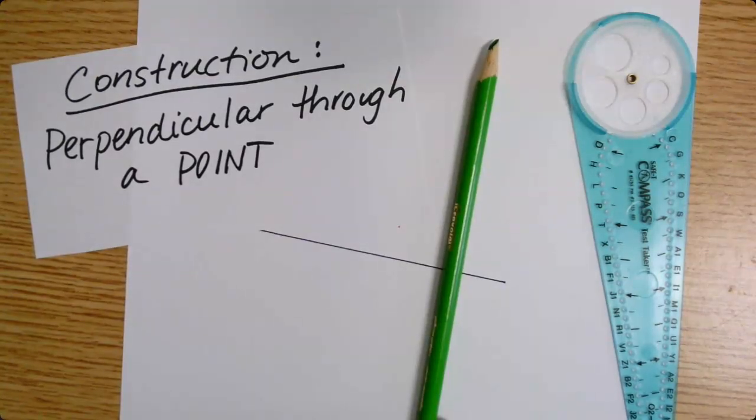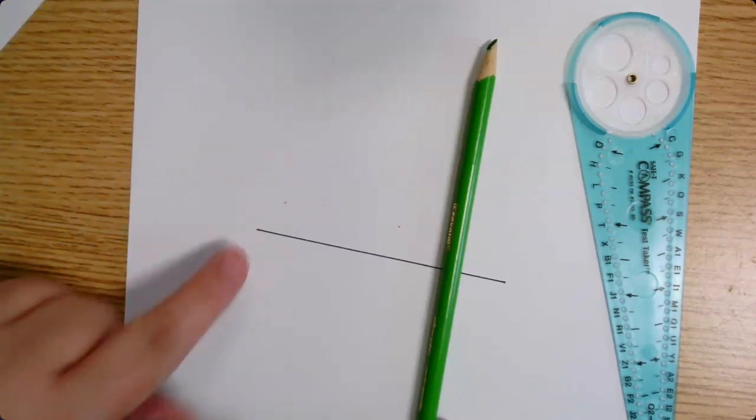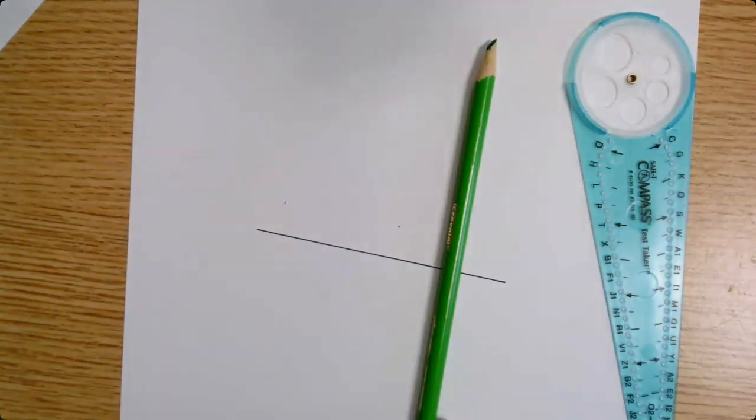Now you might be asking yourself, didn't we already do this? Didn't we do a perpendicular bisector of a segment? Yes, we did. But notice here, if these are the endpoints of my segment, this doesn't bisect this segment.